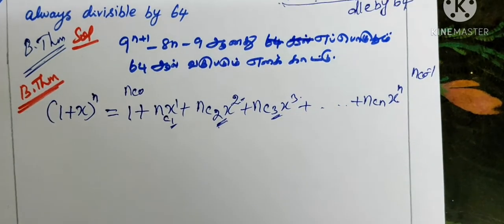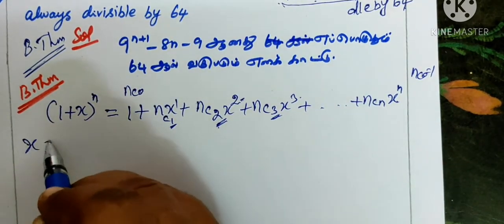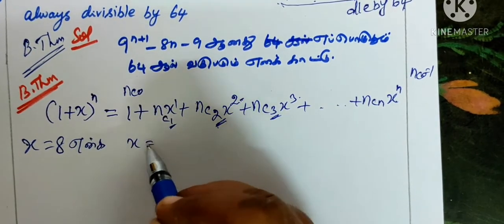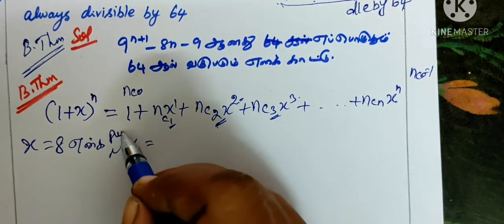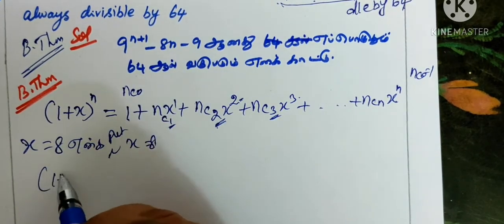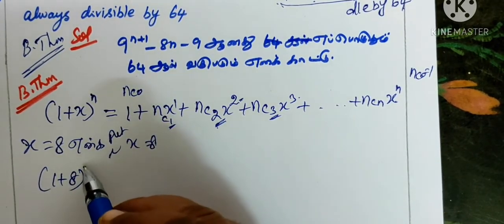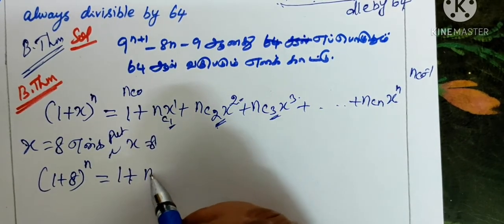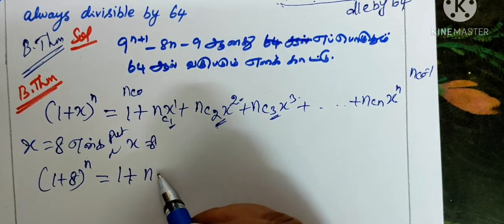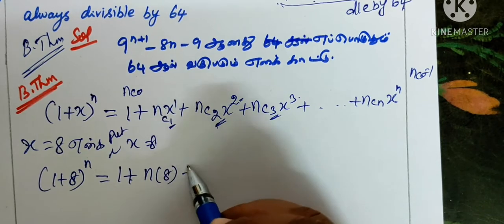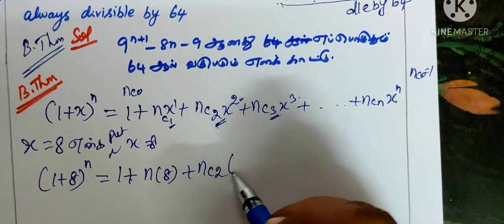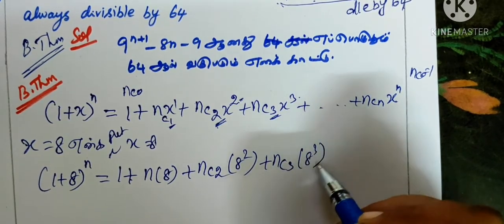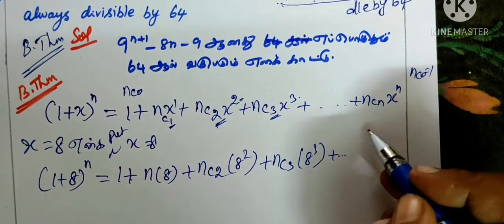In this binomial theorem, we substitute x equals 8. Then we take 1 plus 8 whole power n equals 1 plus n times 8 plus nc2 times 8 squared plus nc3 times 8 cubed, etc.